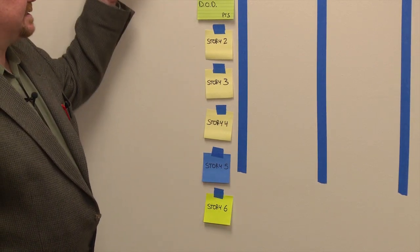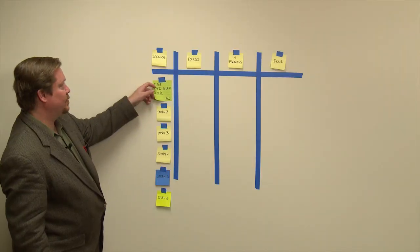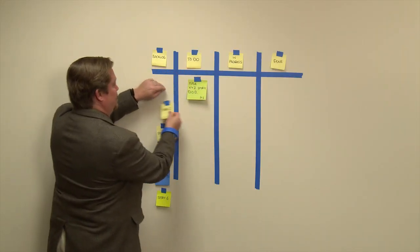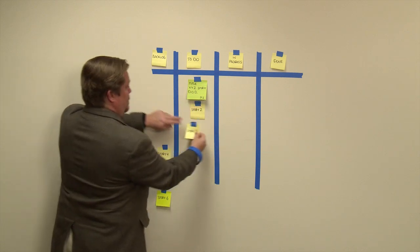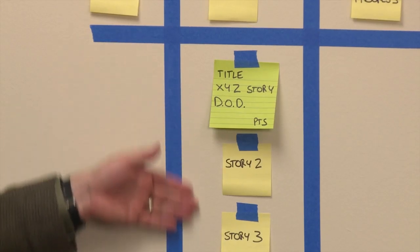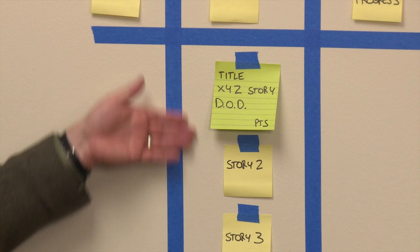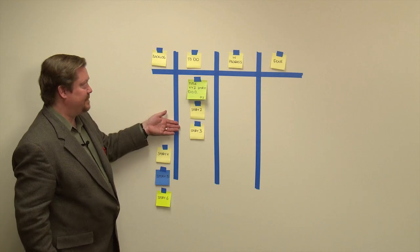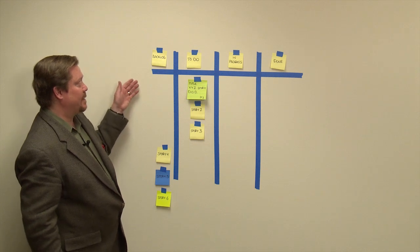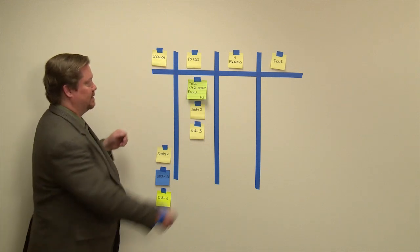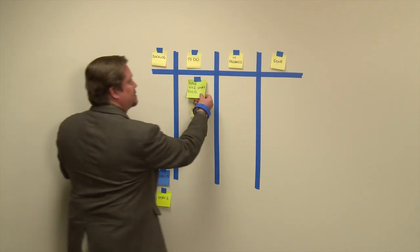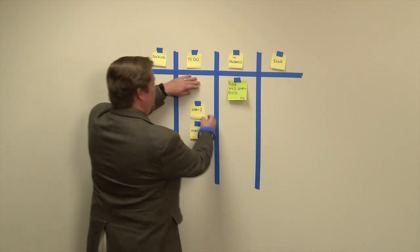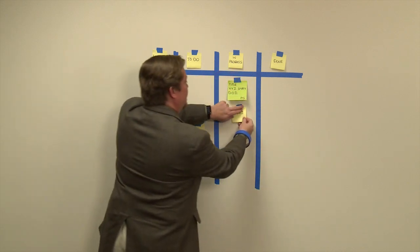As you plan as a team, you take items and you put them into the to-do state. These stories here might represent your sprint backlog. Every day during your daily stand-up, the team gets together in front of the board and they take work and move it through the different states. So now that we start working on this story, it gets pulled over. As this story gets worked on, it gets pulled over.